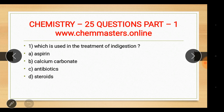Question one: which is used in the treatment of indigestion? The four options are aspirin, calcium carbonate, antibiotics, and steroids. The answer is B, calcium carbonate. We can take calcium carbonate in powdered form or as a chewing tablet or a normal tablet. Aspirin is a painkiller and also used to lower body temperature. Steroids, antibiotics, and aspirin can themselves lead to indigestion, so calcium carbonate is taken to treat it.